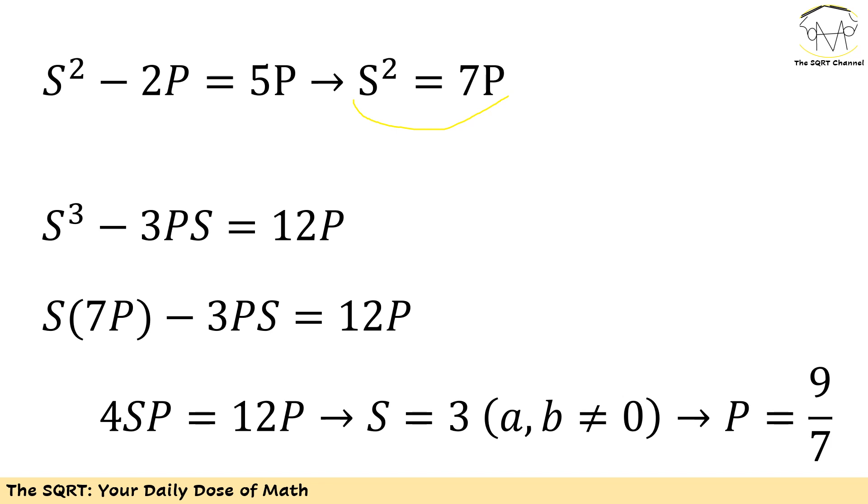I'm going to use s² in the second equation now. Remember I found s³ - 3ps = 12p. I'm going to replace s² with 7p and then I will have s(7p) - 3ps = 12p. Simplifying this I will end up with 4sp = 12p. Now remember a and b are not zero, so p cannot be zero and I can remove p from both sides. Then I will end up with s = 3. This means p is going to be 9/7.